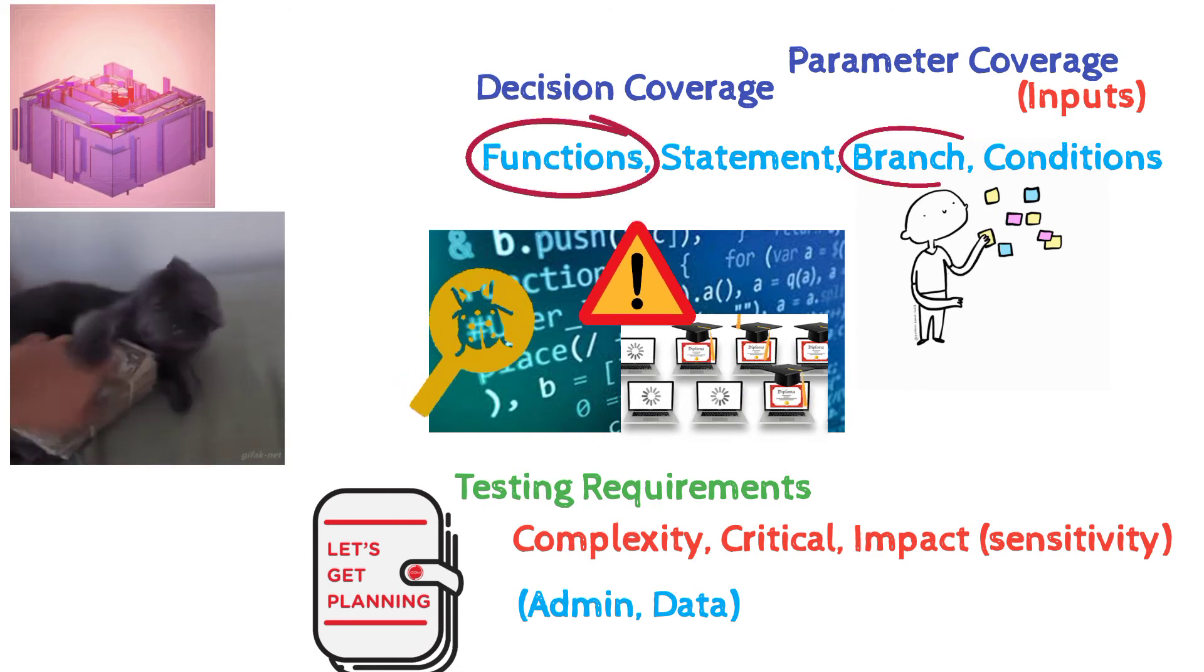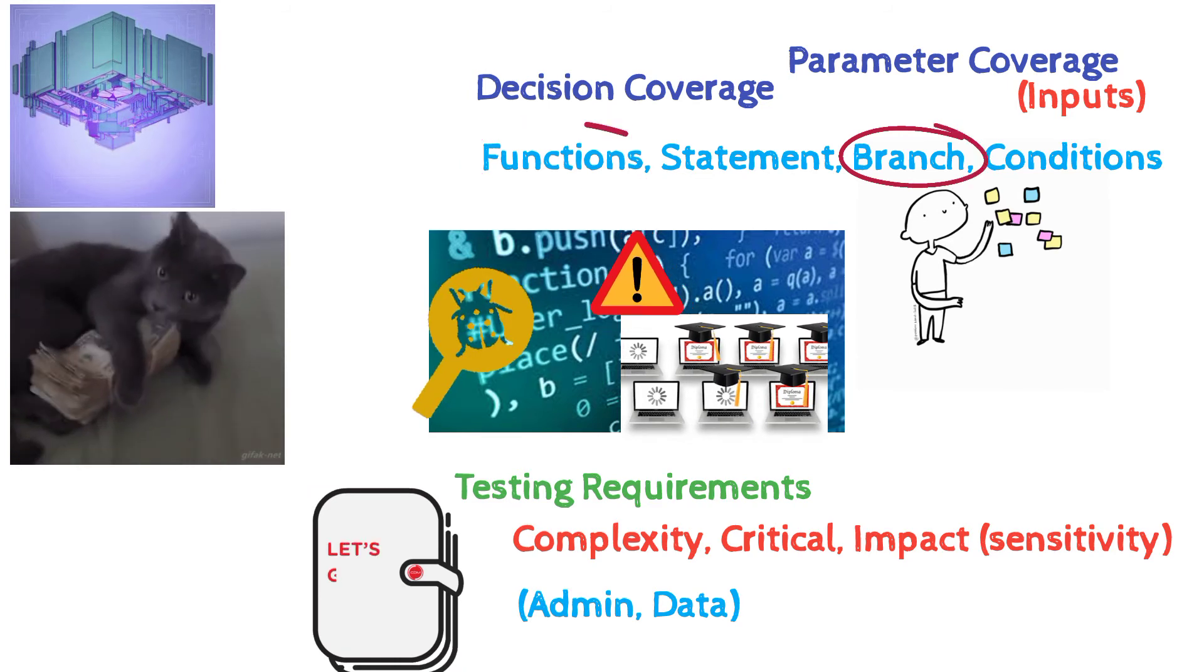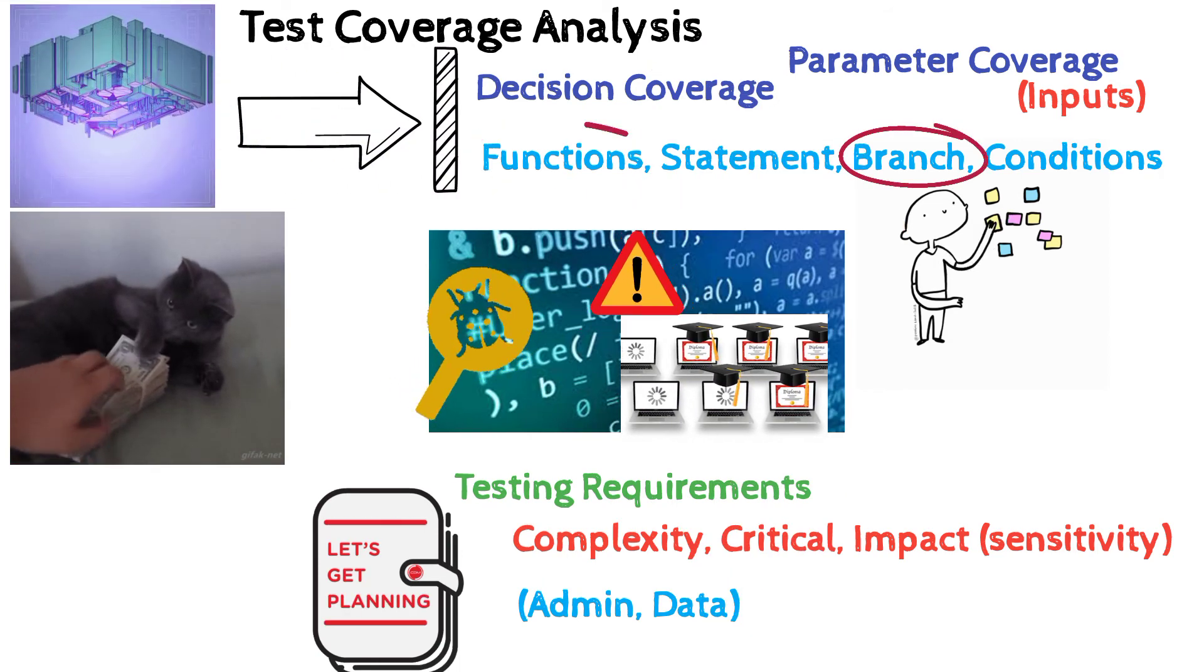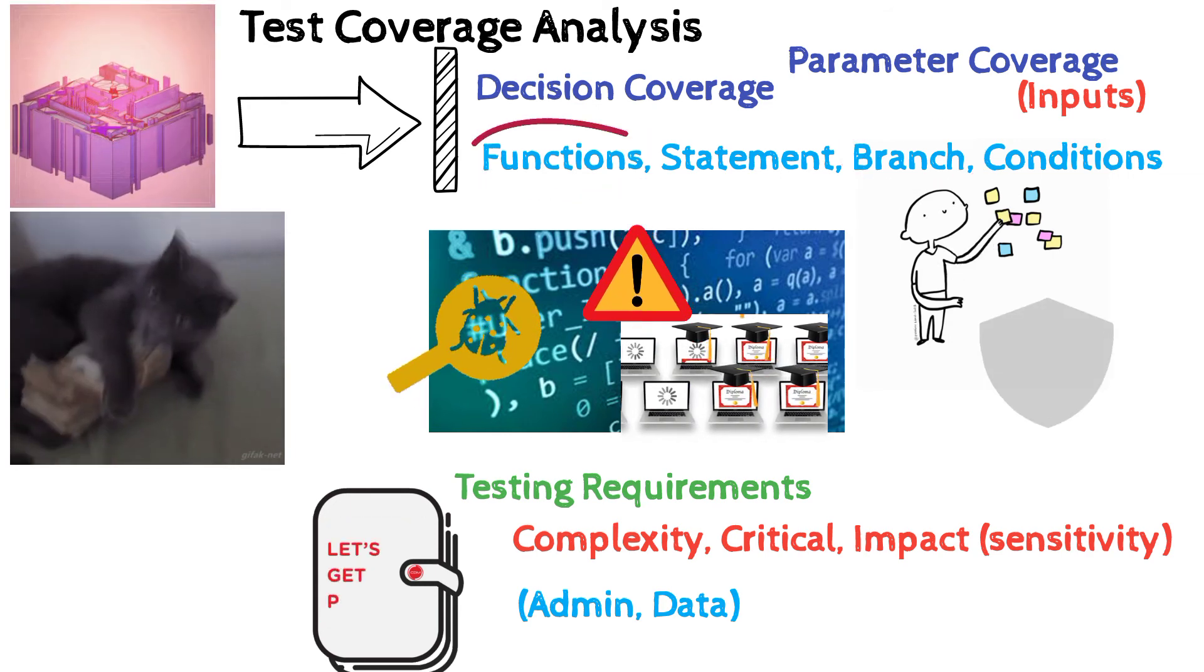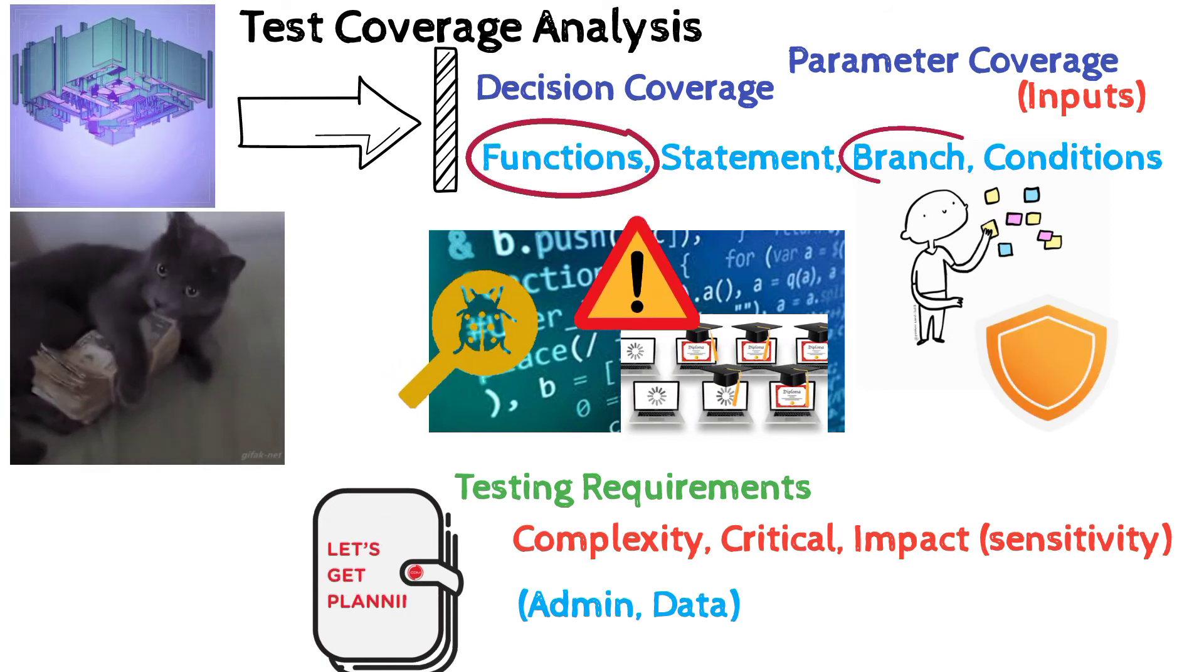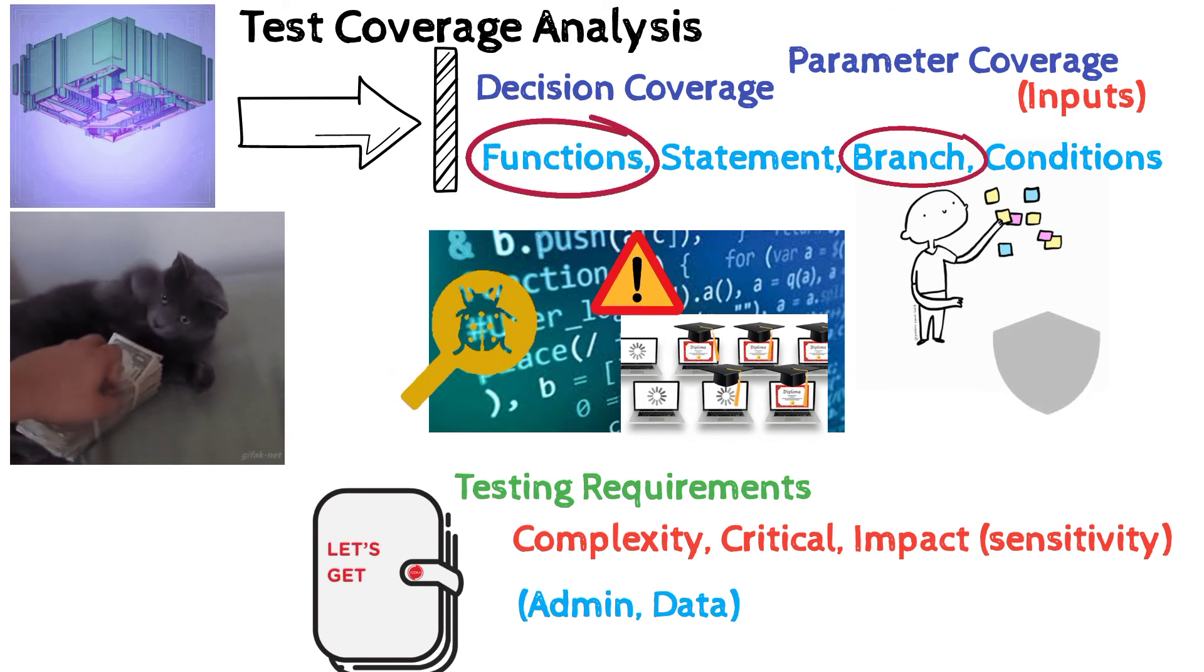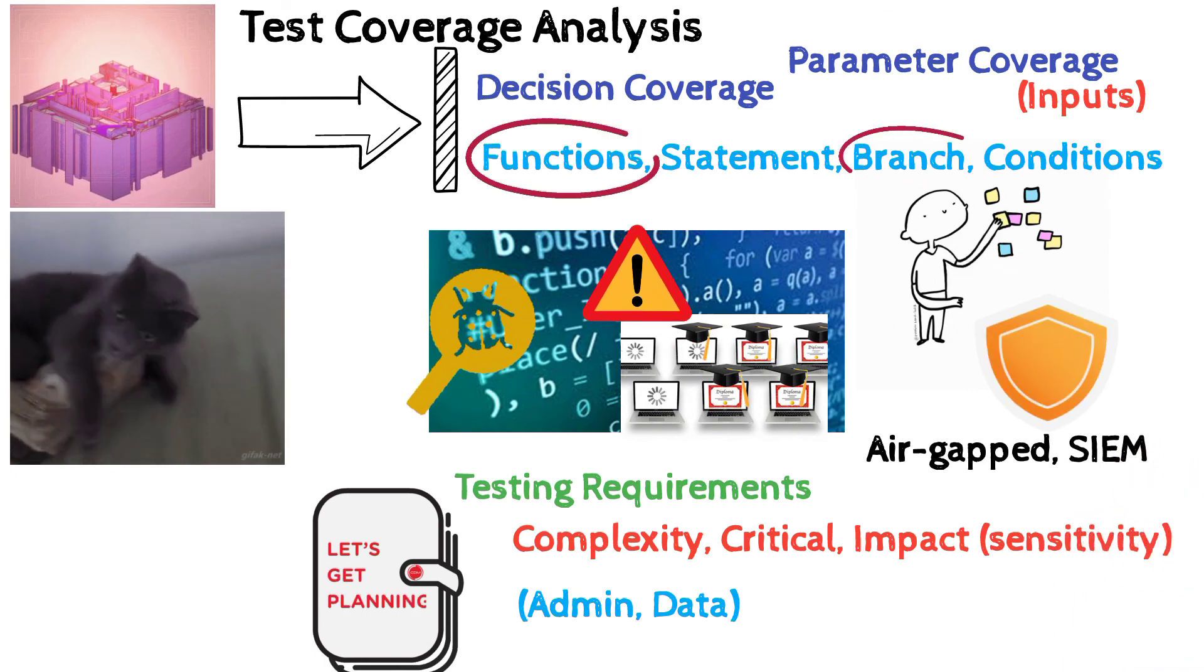Now it would be impossible to perform 100% testing of an application. However, test coverage analysis ensures that all critical features of an application are tested. And moreover, compensating controls are deployed against the features or areas of an application which remained untested, for example, by deploying air-gapped systems or continuous monitoring solutions.